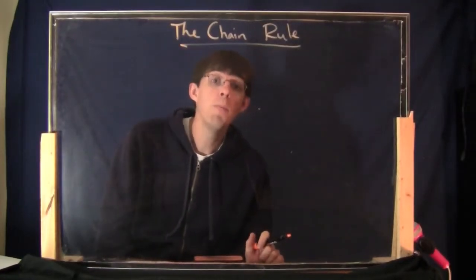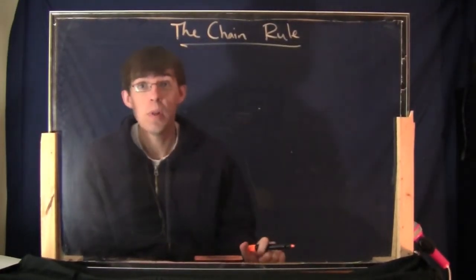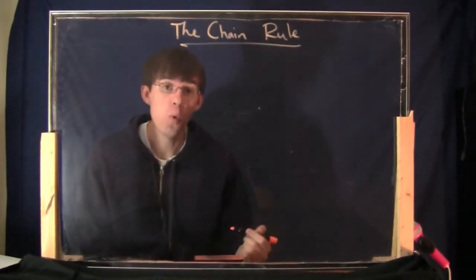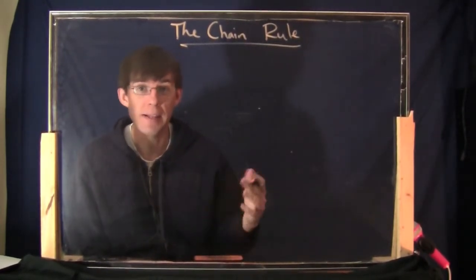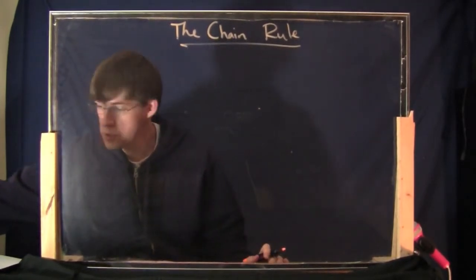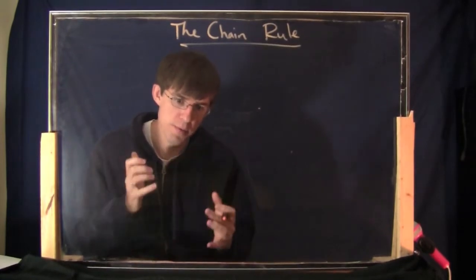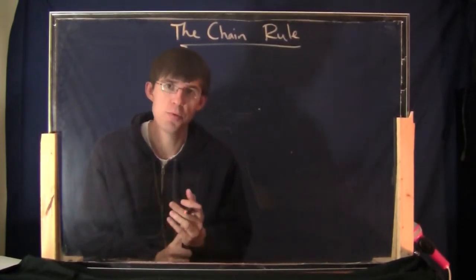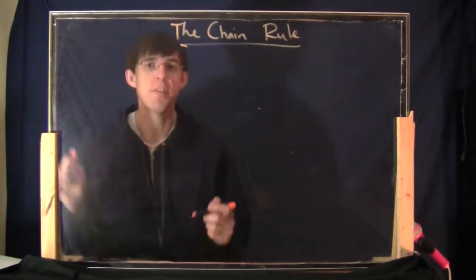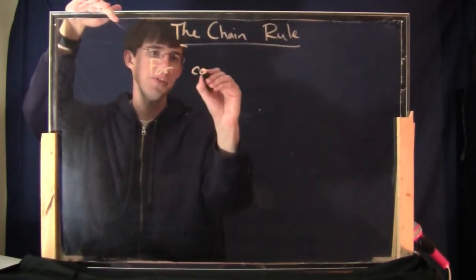Today we're going to talk about one more rule for the derivative. We had the product rule and the quotient rule. There's one more important rule of that same sort of nature that we need to talk about. This is a rule — not for when things are multiplied, which is the product rule, or divided, which is the quotient rule. It's for when you have one function stuck inside of another function. This is called compositions.